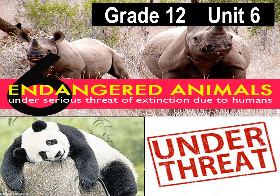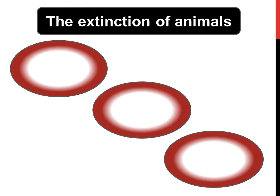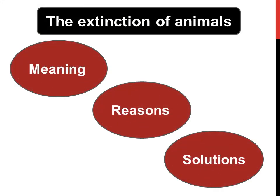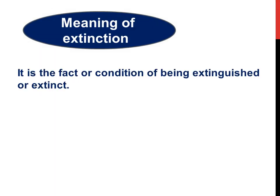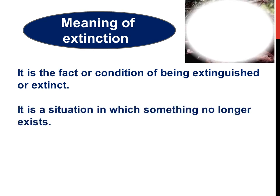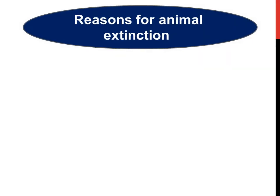Great wolf, Unit 6: Under Threat — the extinction of animals. Meaning of extinction: it is the fact or condition of being extinguished or extinct. It is a situation in which something no longer exists.